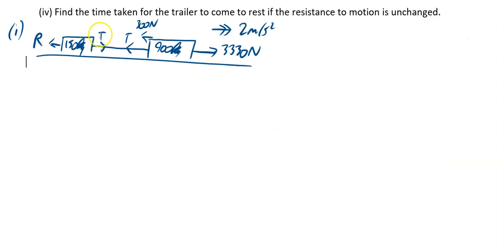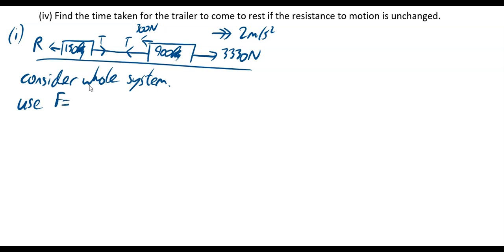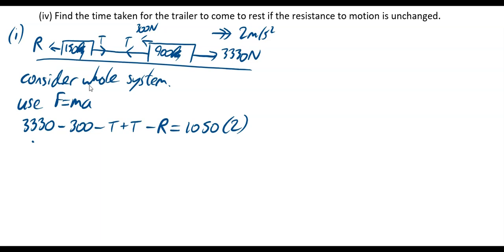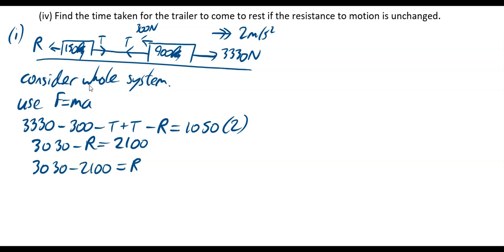Consider the whole system using F = ma. The tensions cancel, giving 3330 − 300 − R = 1050 × 2 = 2100. So 3030 − R = 2100, which means R = 930 newtons.